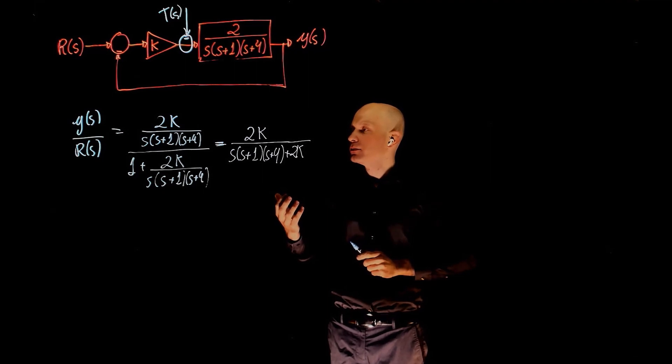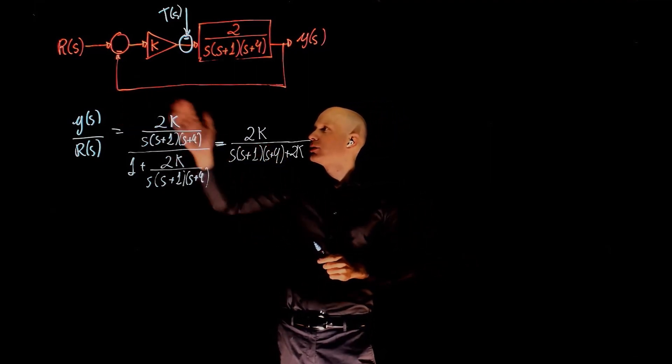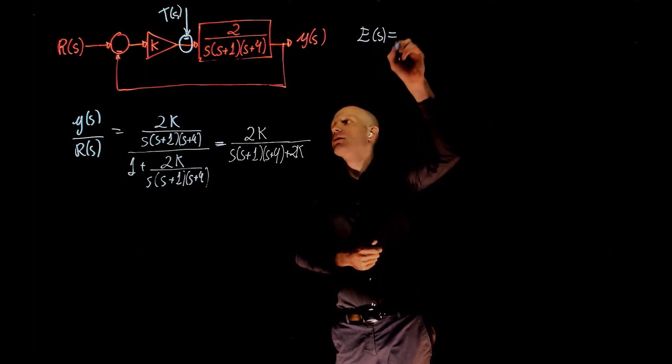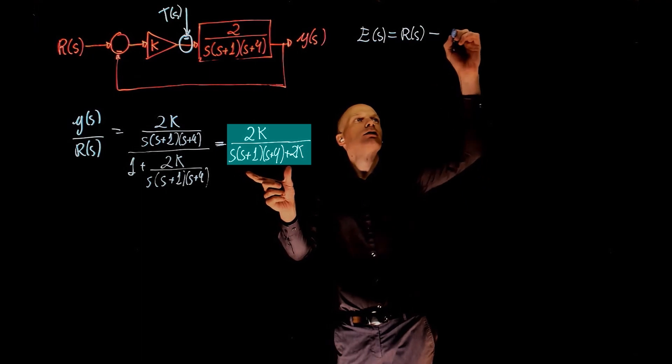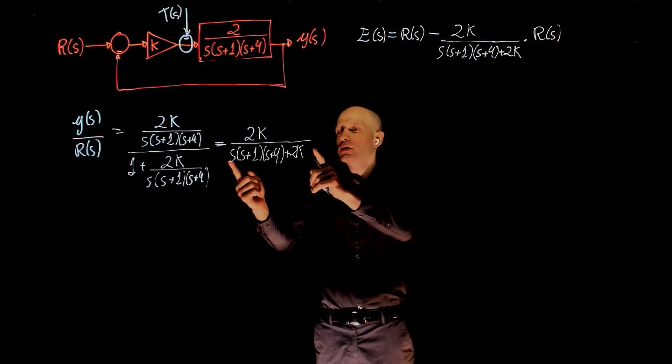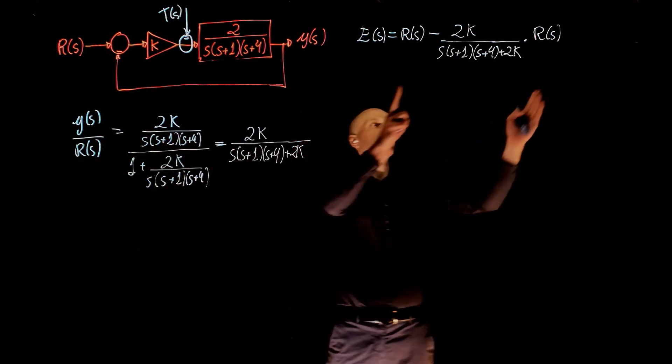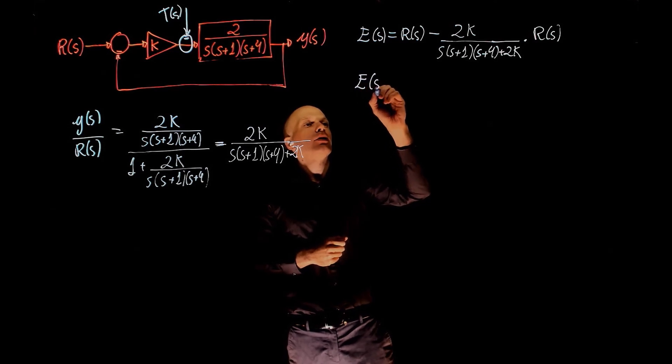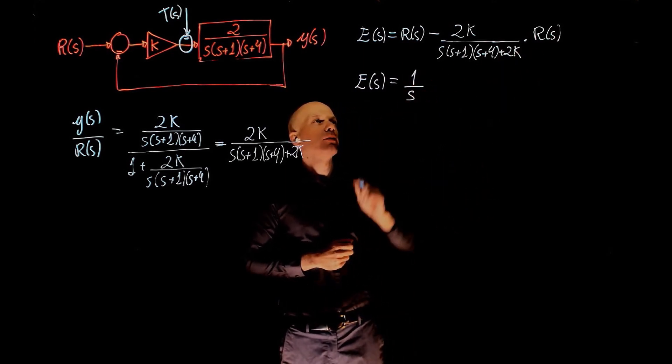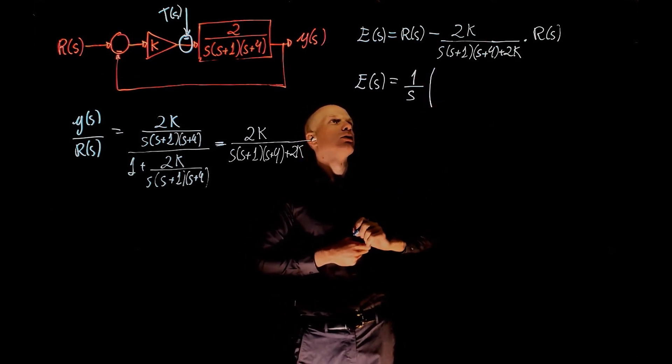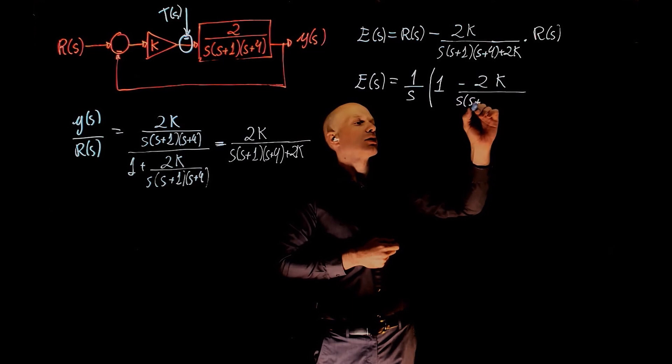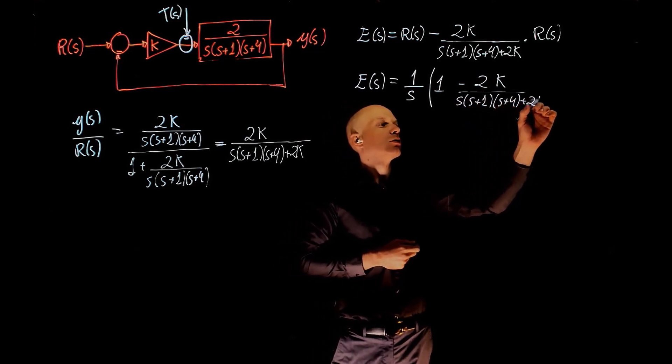Now let's find the steady state error of this transfer function when you give an input to R. And let's assume that that input is a step input. So our error now becomes that input R minus this times the input here again which is R. This is the transfer function. We multiply that by R, we get Y. The error now becomes R, we can factor out. And that is going to be 1 over S if we assume that R is a step input. So R(s) is 1/S. This becomes 1 minus 2K/(S(S+1)(S+4) + 2K).